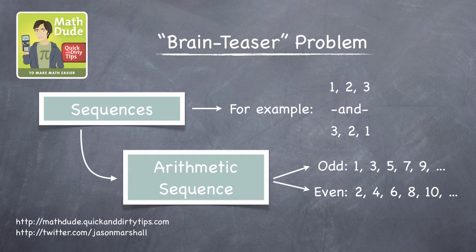That's a sequence where each element differs from the previous one by the same constant value. For example, each of the even and odd positive integers differs from the previous integer in the sequence by two.